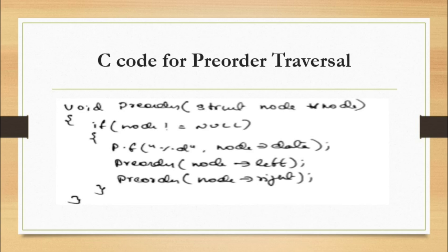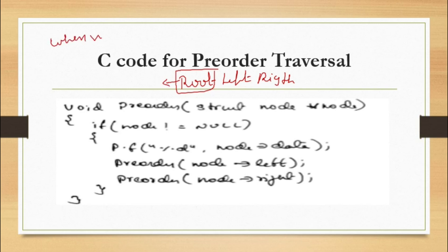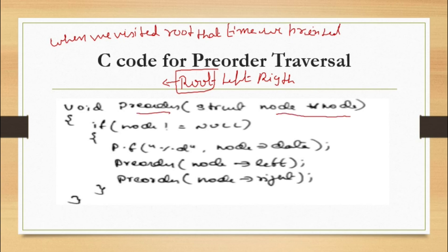In pre-order traversal, we visit the root first, then the left, then the right, and whenever we visit the root we print it. The function is void pre_order with parameter struct node star node. If node is not equal to null, we printf %d node->data first, then call pre_order recursively on the left subtree, then call pre_order on the right subtree. This is the C code for pre-order traversal using recursion.